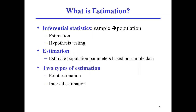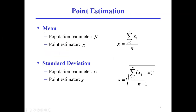There are two types of estimation. The first one is called point estimation. The second one is called interval estimation. For point estimation, for example, you want to find out the population parameter, which is mu, which is used to address population mean. But it's not possible to get mu directly and accurately. So we use a point estimator x-bar to represent population mean, which is mu. Because your x-bar is a specific value, it's a point instead of an interval.